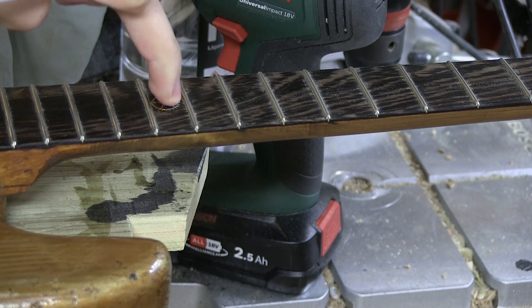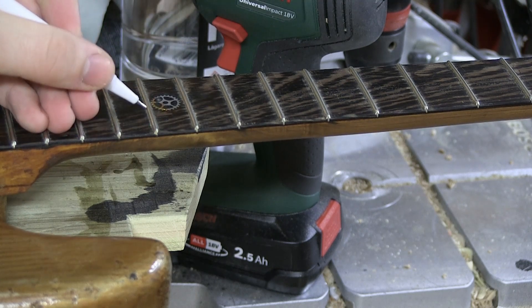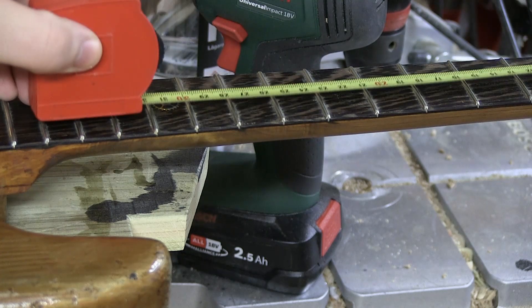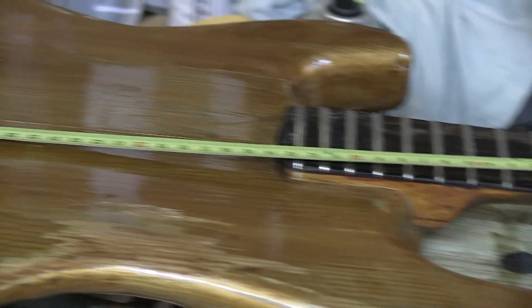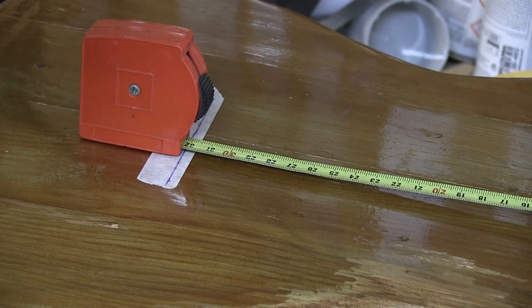When you put down the 12th, it's this side. And then you just take that measurement and you slide it down like this. That's where it is.